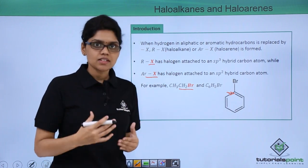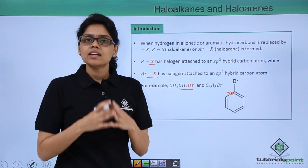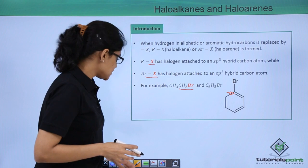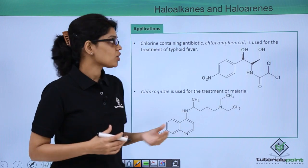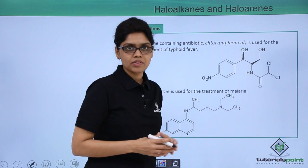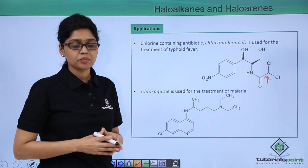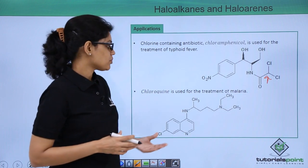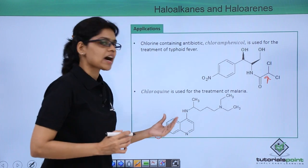Before going into the various physical and chemical properties of haloalkanes and haloarenes, let us try to appreciate their importance and applications. The most important antibiotic chloramphenicol, used for the treatment of typhoid fever, is an example of a haloalkane system. You can see two chlorine atoms attached to an aliphatic system where the carbon has SP3 hybridization. Similarly, chloroquine, used for the treatment of malaria, is an example of a haloarene, as chlorine is attached to an aromatic system.